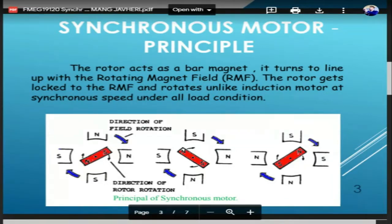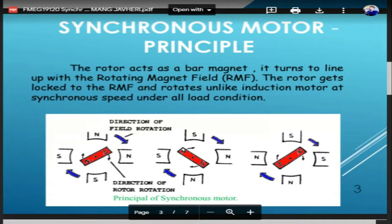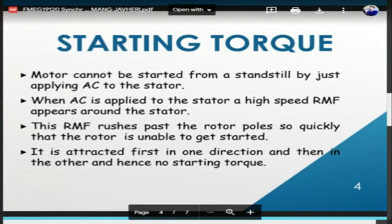The rotor is simply explained as a bar magnet or permanent magnet connected on a shaft. As the rotating magnetic field revolves, this magnet gets magnetically locked for different polarities and the rotor tries to match the speed of the rotating magnetic field. This is how a synchronous motor works — but one problem is that it is not self-starting.